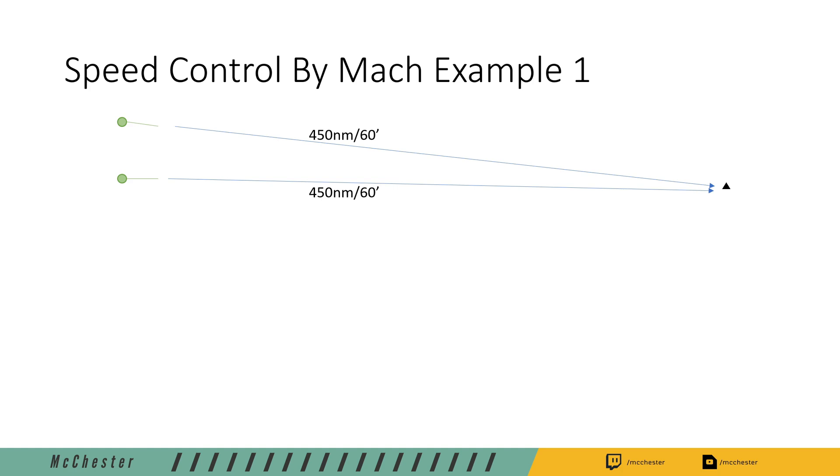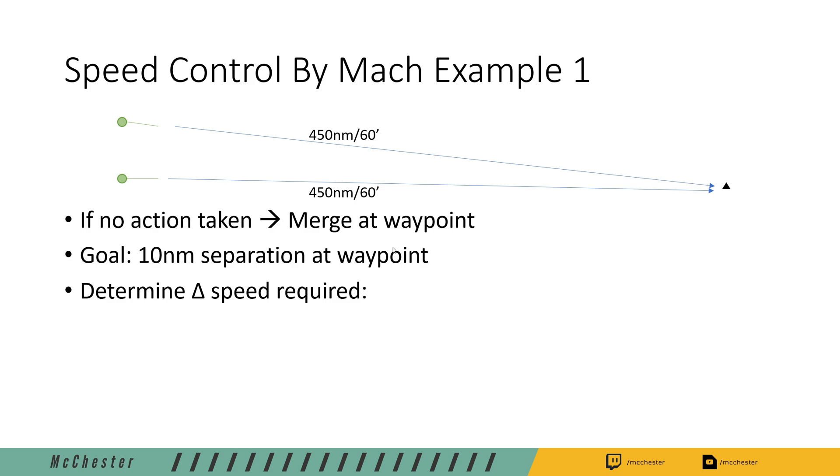Let us put this new gained knowledge to the test with a very easy example. We have two aircraft merging at the same waypoint in one hour or 450 miles. Both aircraft are flying ground speed of 450 knots. So what's going to happen if we do not take any action? The two aircraft are going to merge at the waypoint. Our goal is we want to have 10 nautical miles separation once those two aircraft have passed said waypoint, and for that we need to determine the delta speed, the speed difference that we require those two aircraft to have.